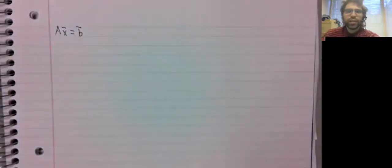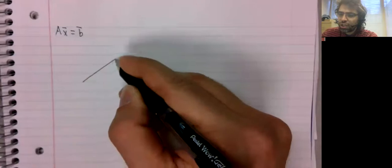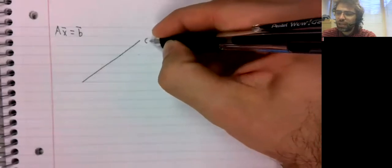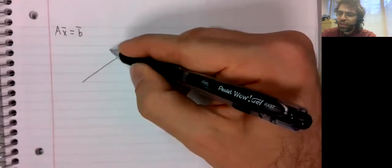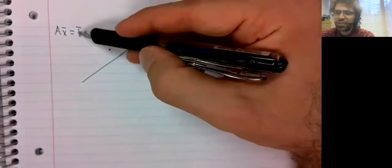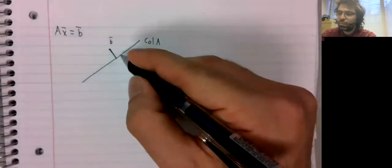Let's recall the situation we are in. We are looking at a matrix equation Ax equals b that doesn't have solutions, and we are trying to come close to being a solution.